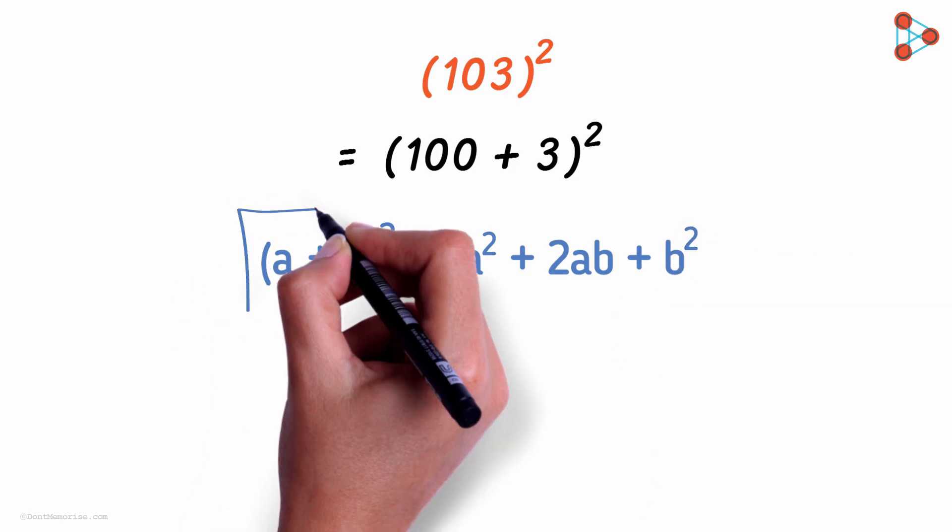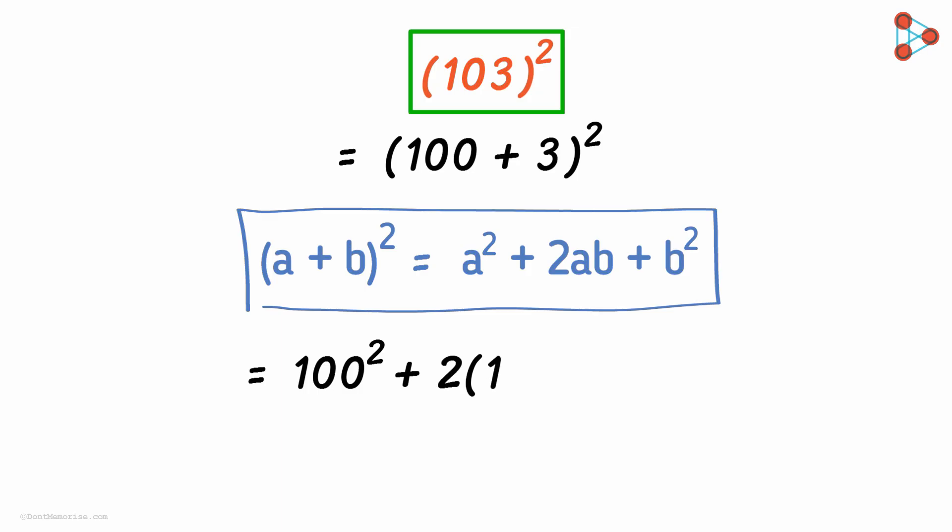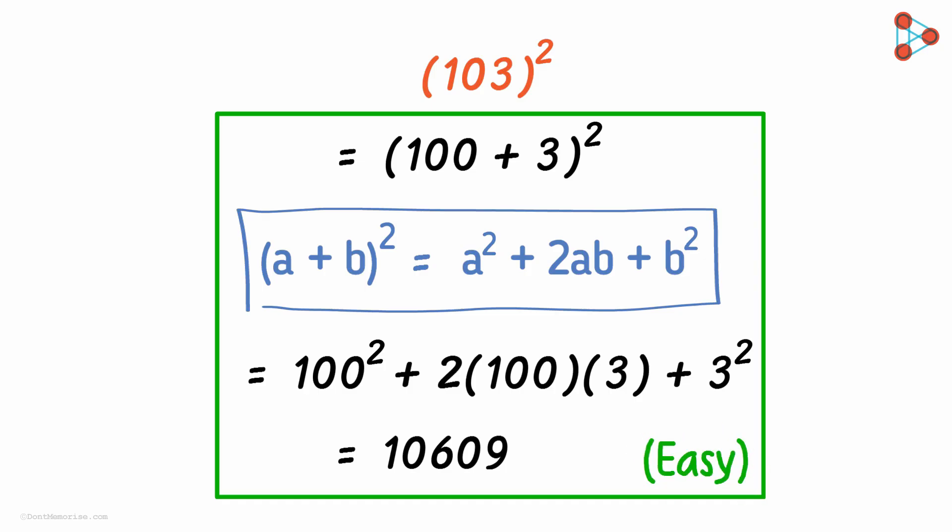Hence, we can apply this formula and get the answer of hundred and three the whole squared as ten thousand six hundred and nine. This method is much simpler as compared to multiplying it the regular way.